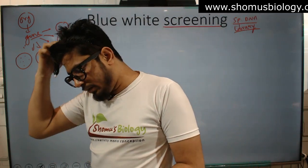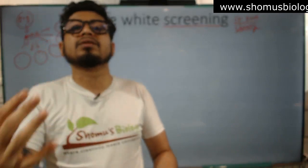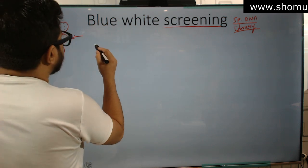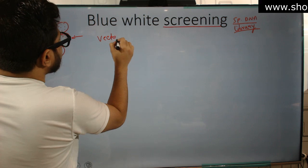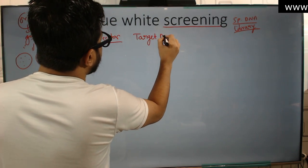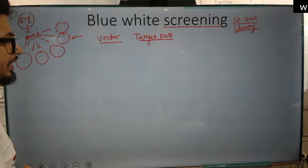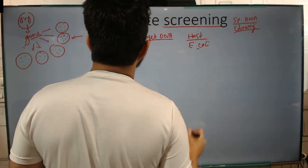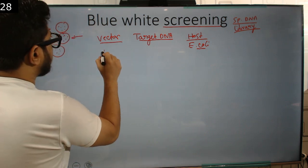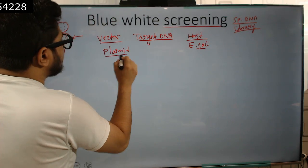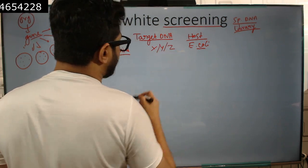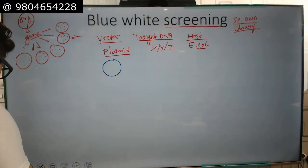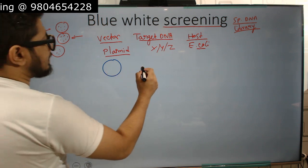Now that is the big question. When we conduct the process of molecular cloning, what happens? We have a vector — let us say it is a plasmid vector — we have a target DNA, and we have a host, let us say E. coli. The target DNA is whatever gene X, Y, Z we are targeting. We cut the plasmid and try to insert the target DNA there.